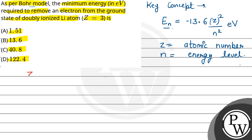We will use this formula to solve the question. Here Z = 3 and n = 1 (ground state), so E₁ = −13.6 × (3)² / (1)² = −13.6 × 9.